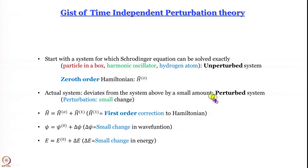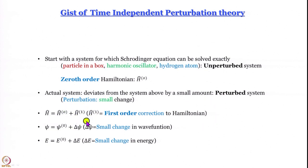The perturbed system should deviate from the unperturbed system only by a very small amount. Then we can write the Hamiltonian of the perturbed system as the zeroth-order Hamiltonian plus a first-order perturbation term H'. We can write the wave function as ψ⁰ plus a small δψ due to first-order perturbation, and the energy E as E⁰ plus δE, where δE is a small change in energy due to the perturbation introduced.